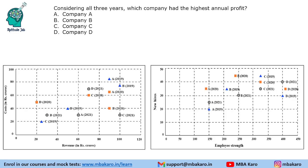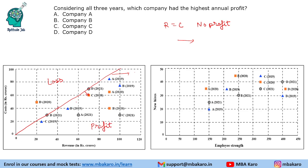Considering all three years, which company had the highest annual profit? For scatter plot questions, you do not need to write down the values. If revenue is equal to cost, there will be no profit — that is the line of no profit. If you have to make profit, you should be on the right-hand side of the line. The farther a point is from that line, the higher the profit. For example, revenue 90 and cost 65 gives profit 25, whereas revenue 70 and cost 60 gives only profit 10.